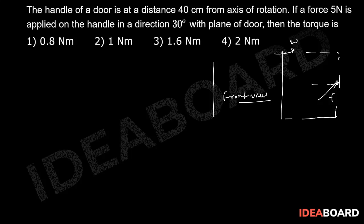Now suppose there is a handle like this. The force is actually applicable like this, making an angle of 30 degrees from the plane of the door. This is our door — you are watching from the front view. They are asking the torque about the axis of rotation, so this is your axis of rotation.